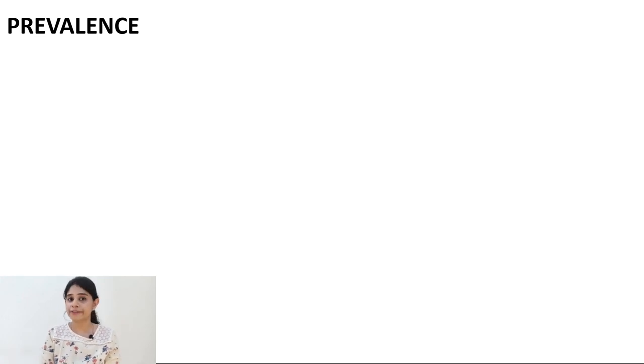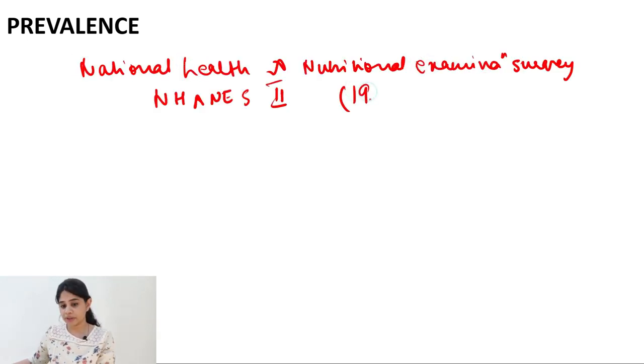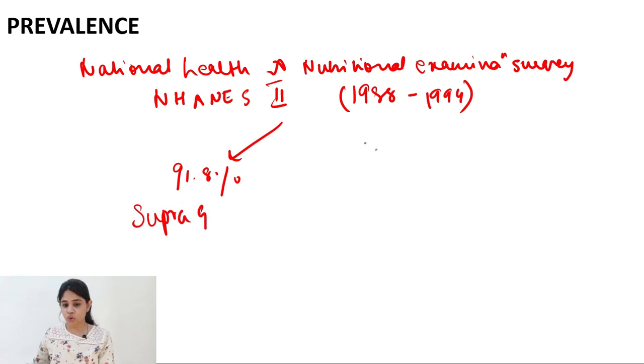So now let's move on and talk about the prevalence of dental calculus. Now it was seen through the National Health and Nutritional Examination Survey. Now this was conducted between the years 1988 to 1994 and it was seen that 91.8% of the individuals had the presence of the supra-gingival calculus whereas only 55.1% of the individuals had the sub-gingival calculus. So this was seen in a group of 9,689 people. It was a study which was conducted in the US and it was seen that the prevalence of supra-gingival calculus was far more than the sub-gingival calculus.